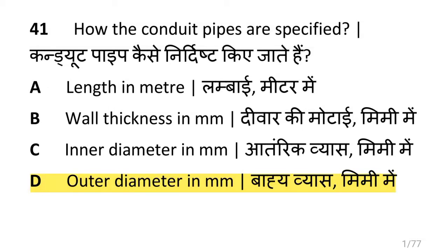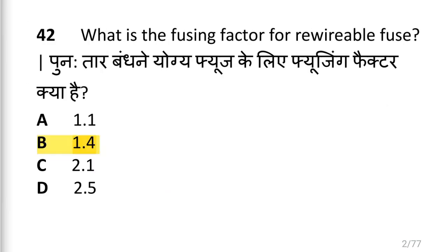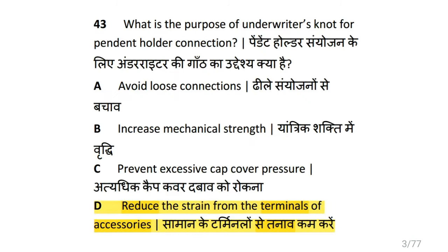Dear friends, we are going to see basic wiring practice. How is the conduit pipe specified? By outer diameter in mm. What is the fusing factor for rewireable fuse? That is 1.4.